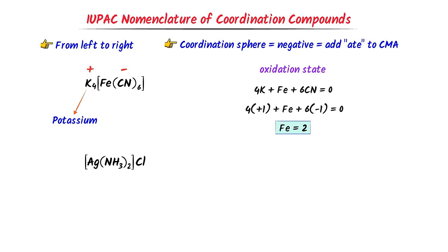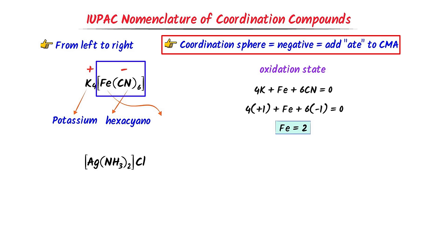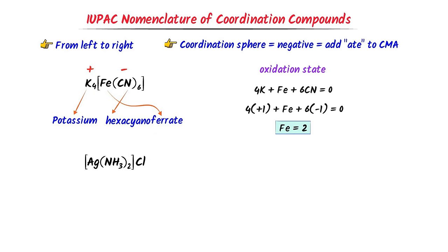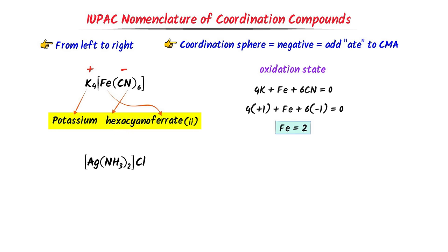Now I write 'potassium'. Remember that in case of counter ions we do not consider the numbers — we do not write 'di', 'tri', etc. Secondly, in the coordination sphere, I name the ligand. There are 6 ions of cyanide, so I write 'hexacyano'. Lastly, the central metal atom is iron. Since the coordination sphere has negative charge, we put '-ate' with the central metal atom, so for iron I write 'ferrate'. The oxidation number of iron is 2. Thus I get 'potassium hexacyanoferrate(2)'.